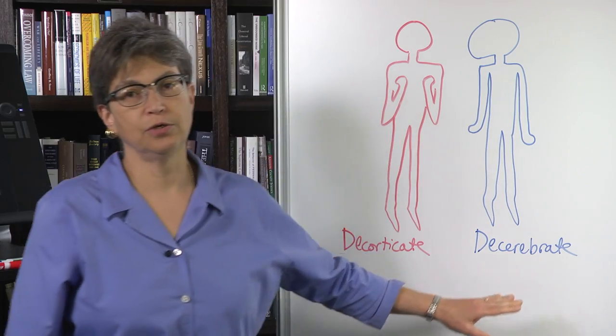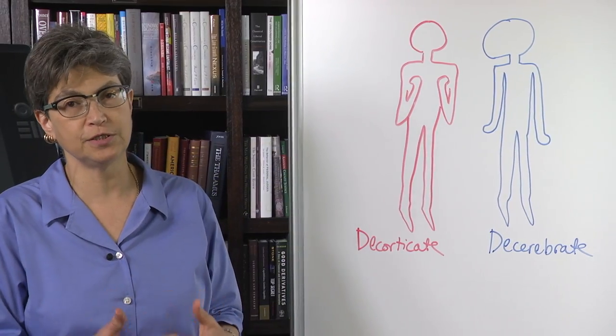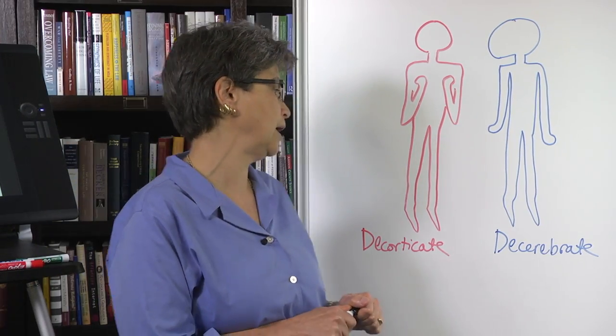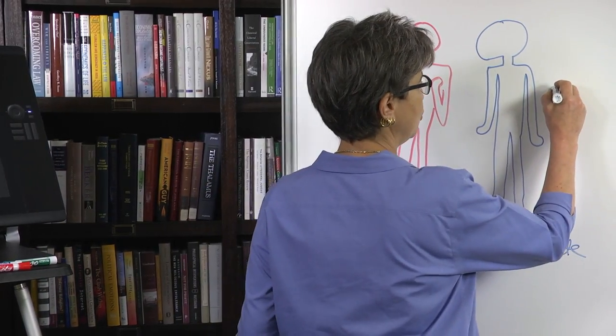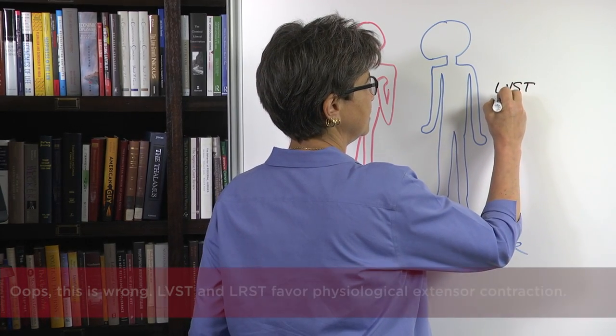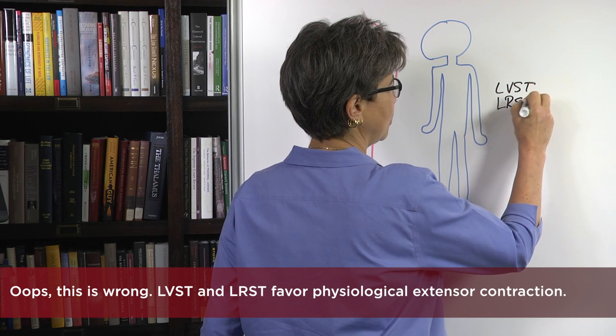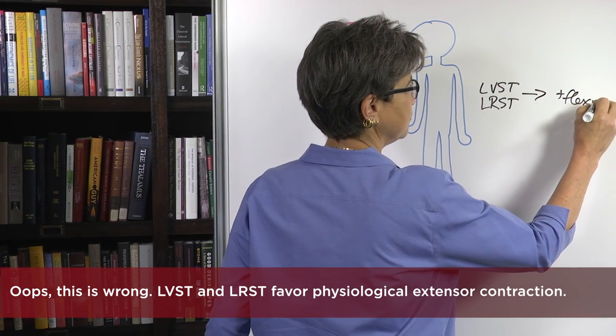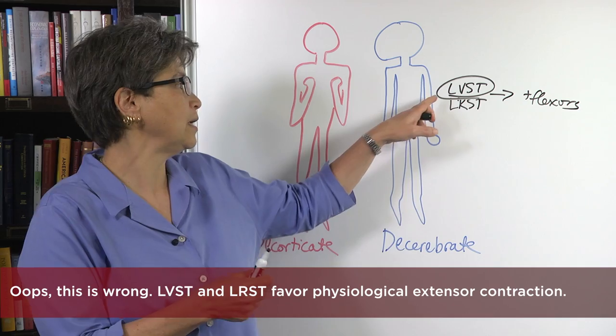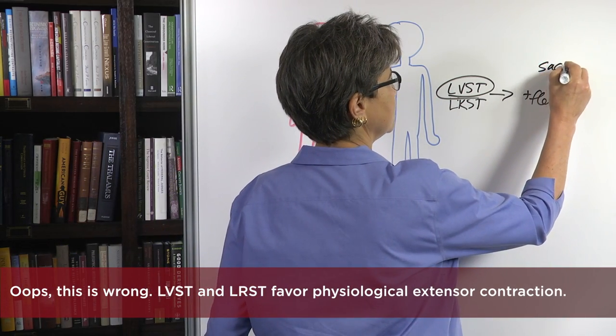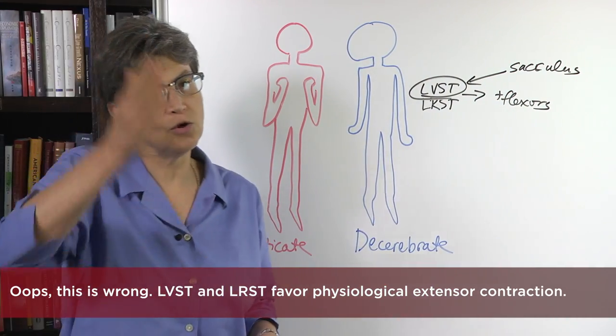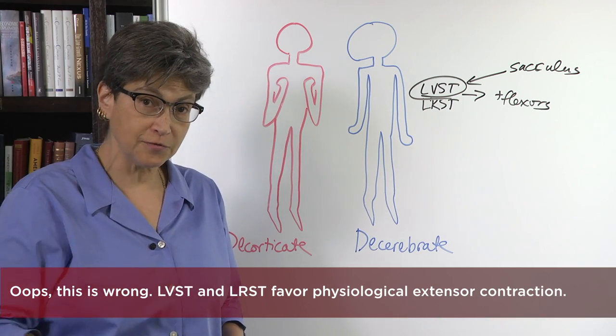This decerebrate posture occurs in quadrupeds and has been studied ever since Charles Sherrington. And so the LVST, the lateral vestibular spinal tract, and the lateral reticular spinal tract. And this lateral vestibular spinal tract is really important because what the input to the lateral vestibular spinal tract is the sacculus. And remember that the sacculus is the otoconial organ that is oriented vertically and is sensitive to gravity.